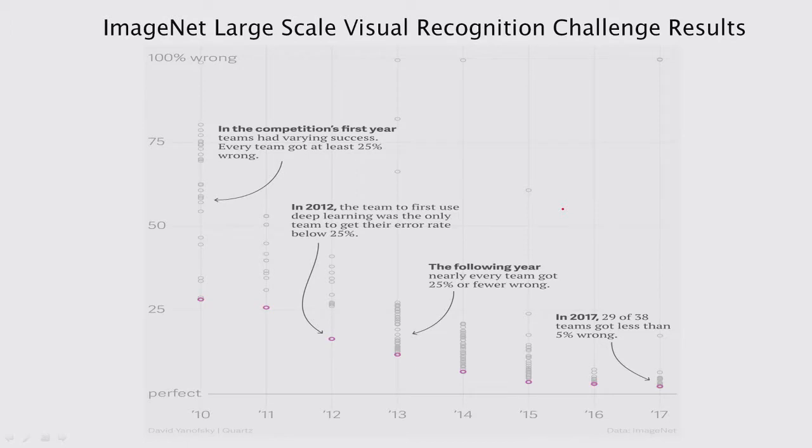One point for people not familiar with that competition: the accuracy is measured as top-five — teams are allowed to make five guesses, and if any of those five are the correct label, it counts as correct. So the 5% error rate is in that context.